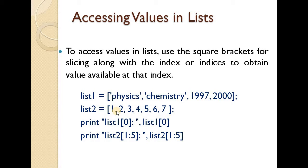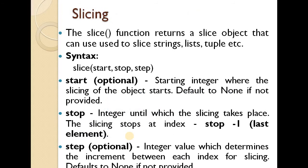So list1[0] gives 'physics' and list2[0] gives 1. Then print list1[1:5] — values at indices 1, 2, and up to 5. Similarly, list2[1:5] gives the values at those positions. With these examples, we can describe list indexing.